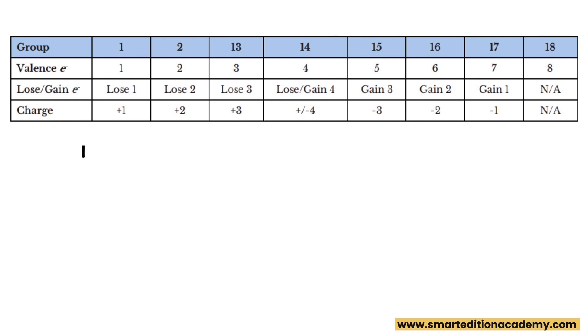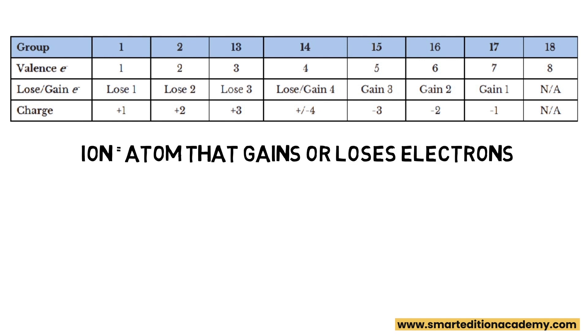When electrons are transferred, atoms become ions, an atom with a net positive or negative charge. When an atom loses electrons, it becomes positively charged and defined as a cation. So in the case of magnesium, when it would lose electrons, a cation is being formed.